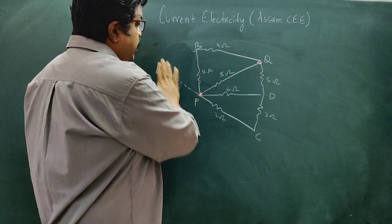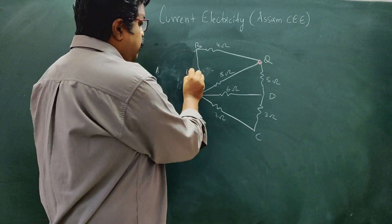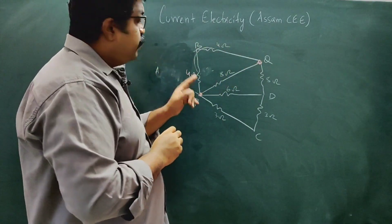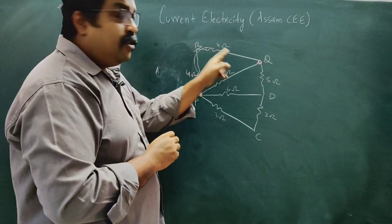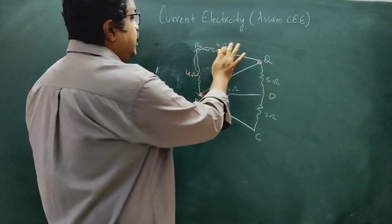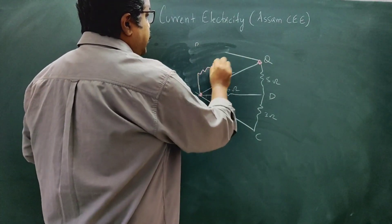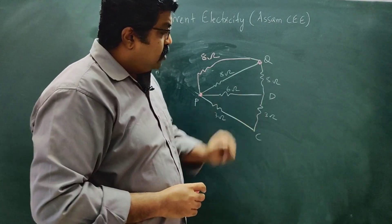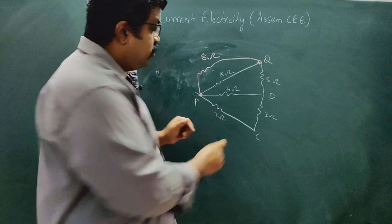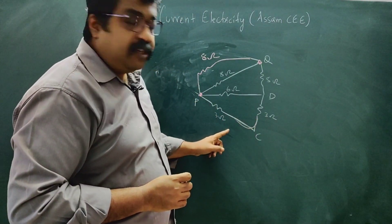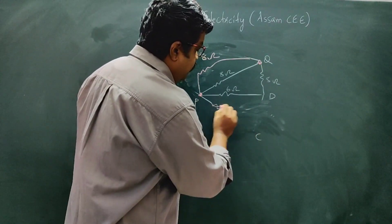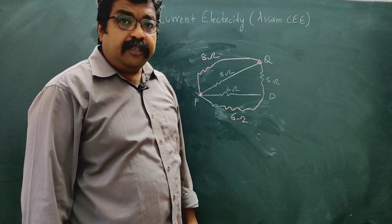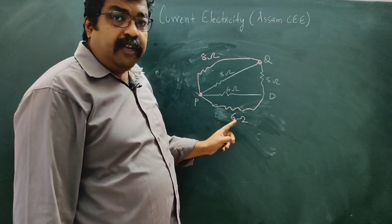So this part gives 4 ohm. This is a single path with reference to PQ, so 4 ohm in series going forward. A top branch is 2. This gives a series result. Three ohm and three ohm — equivalent resistance is three ohm in series, giving six ohm. Six ohm in parallel gives equivalent 3 ohm.